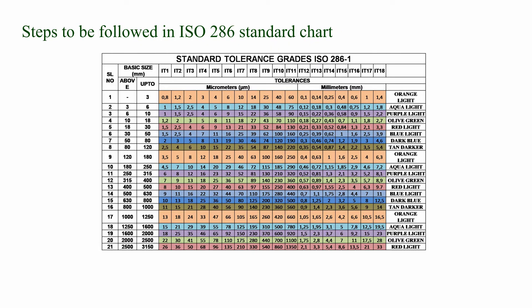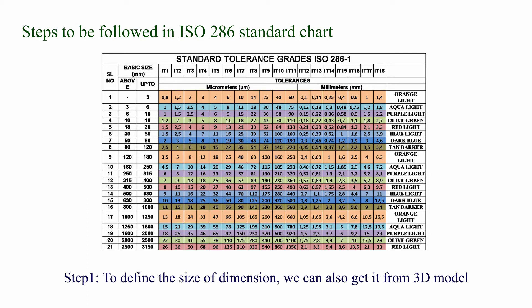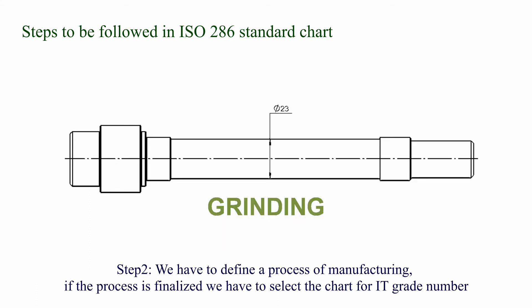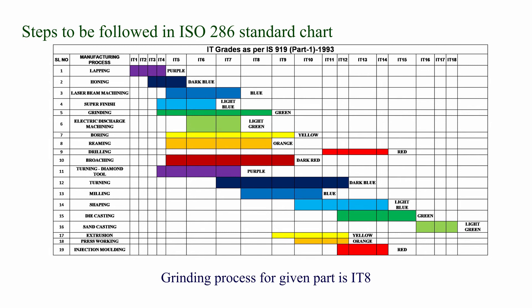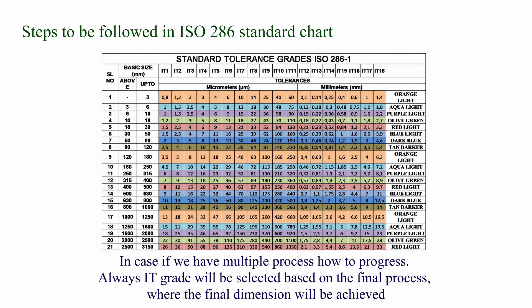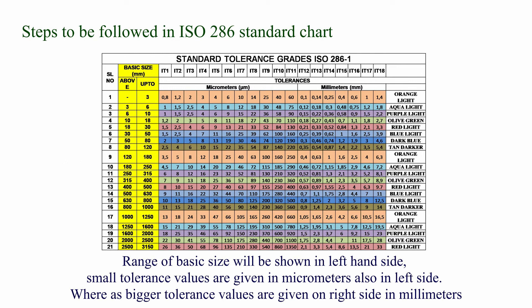We are going to see the steps to be followed in the ISO 286 standard chart. Step 1: Define the size of the dimension — we can also get it from the CAD model or drawing. Step 2: Define the process of manufacturing. If the process is finalized, we have to select the chart for the IT grade number. For example, the grinding process for a given product is IT8. In case of multiple processes, the IT grade will be selected based on the final process where the final dimension will be achieved. The range of basic size is shown on the left-hand side. Small tolerance values are given in micrometers on the left-hand side, whereas bigger tolerance values are given on the right-hand side in millimeters.